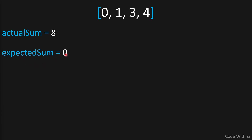The second thing we need is another variable called expected sum. This is the sum of all numbers if none of them were missing. Since we have four numbers, we need all numbers from zero to four, and we add them all together.